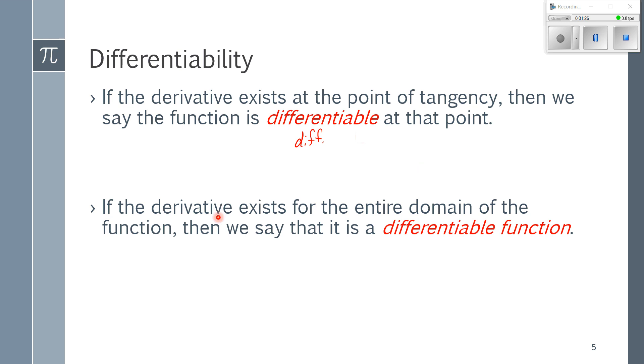If the derivative or the slope exists for every point in the domain of the function, then it's a differentiable function. So if we see the phrase differentiable function, that's already telling us that the derivative or the slope exists everywhere in the domain.